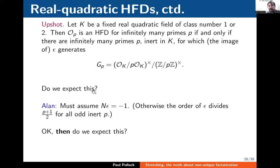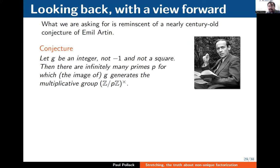The upshot: let K be a fixed real quadratic field of class number 1 or 2. Then O_p is a half-factorial domain for infinitely many primes p if and only if there are infinitely many primes p inert in K for which the image of ε mod p generates the group G_p. Allen pointed out one extra necessary condition: the norm of the fundamental unit ε must be -1. Otherwise the order of ε will divide (p+1)/2 rather than equal p+1 for odd p. Assuming norm(ε) = -1, do there exist infinitely many inert primes p for which ε generates G_p?